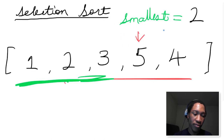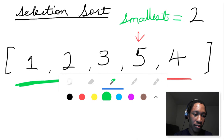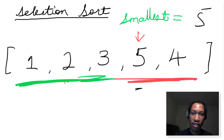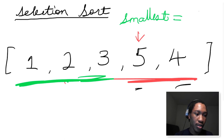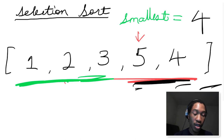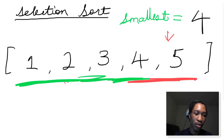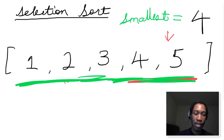We move our pointer to the next number, 5, and we look for a number smaller than 5 to swap with in this subarray. Current smallest is 5. Is 5 smaller than 5? No. Is 4 smaller than 5? Yes — so we update our current smallest to be 4. Now we're at the end of the array with no other elements to traverse, so the smallest element in this subarray is 4. We swap 4 with 5. We extend the sorted subarray to include 4. Then we move our pointer to the final element, 5, realize there are no other elements to traverse, do nothing, and extend the sorted array to include 5. We're done.